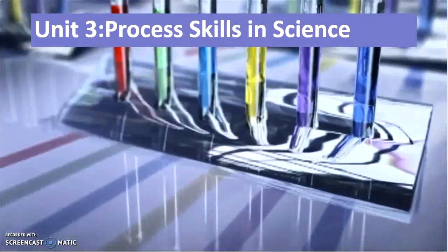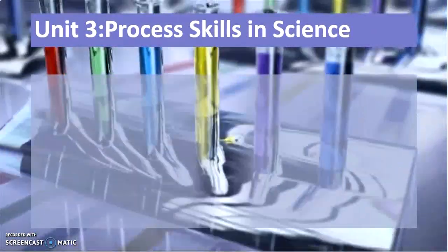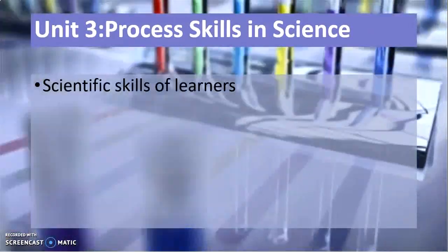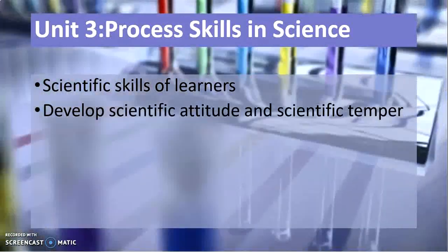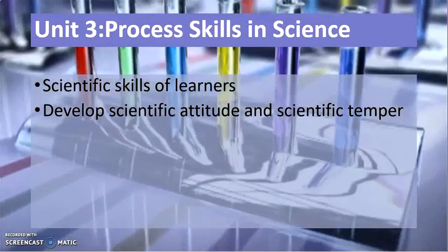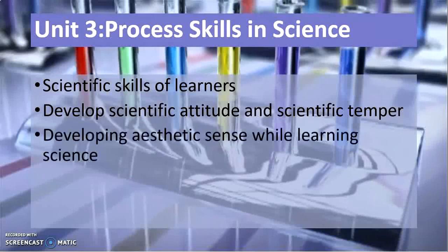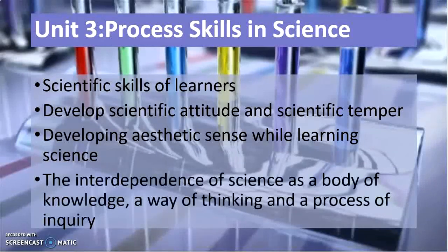Unit three of the course is Process Skills in Science. This unit basically talks about developing scientific skills among learners, developing scientific attitude and scientific temper, developing aesthetic sense while learning science, and the interdependence of science as a body of knowledge, a way of thinking, and as a process of inquiry.